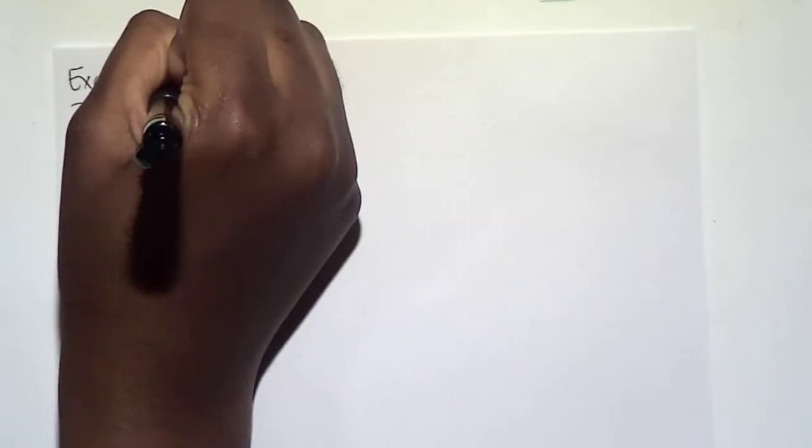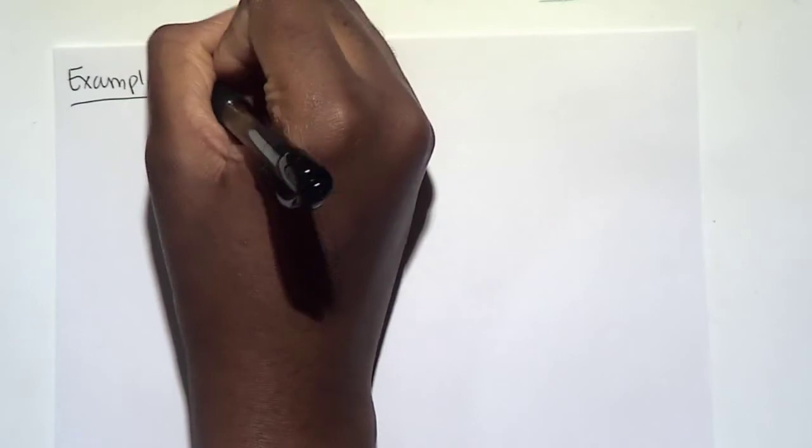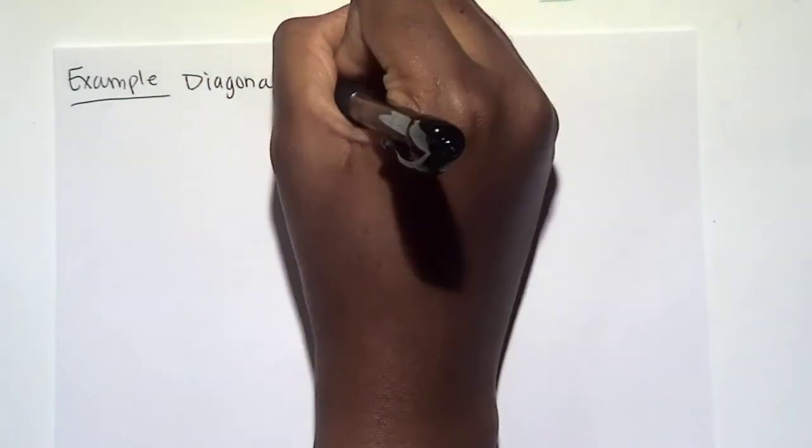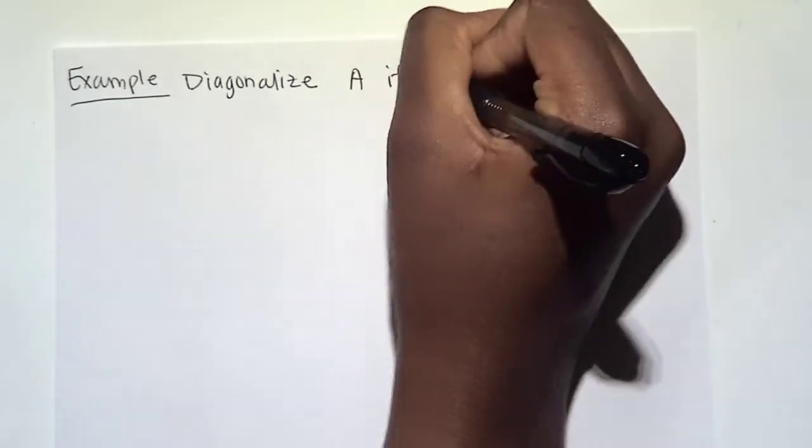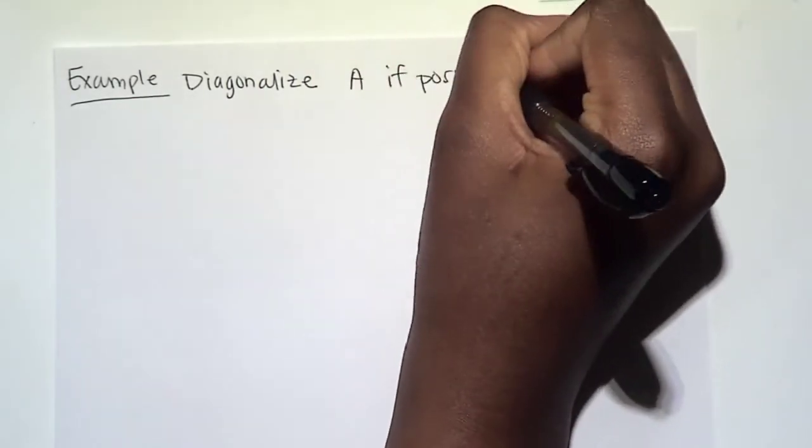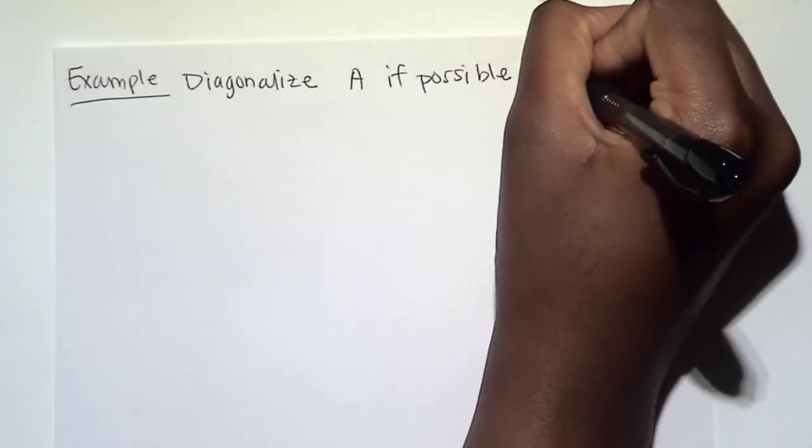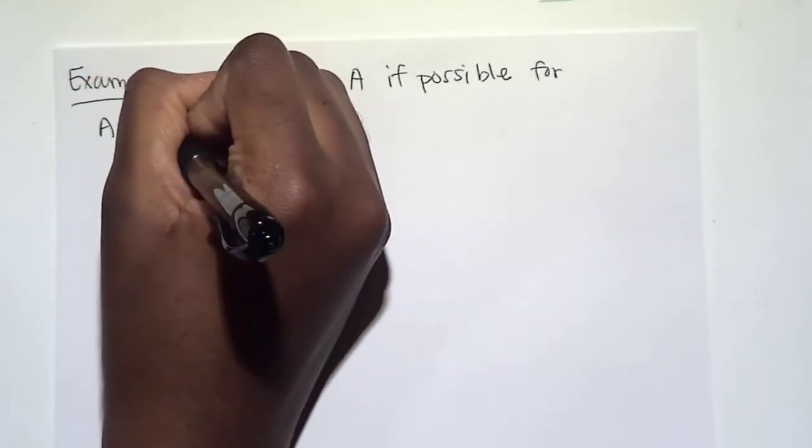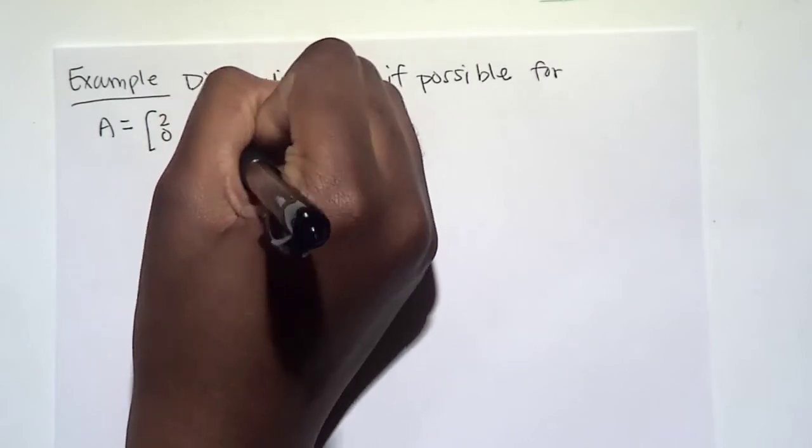Here is our example. You want to diagonalize A, if possible, for our matrix A equals 2, 0, negative 1, 3.